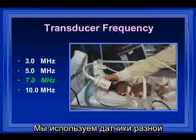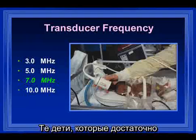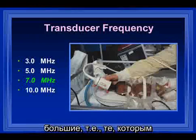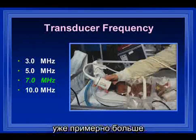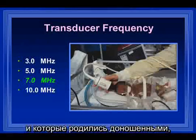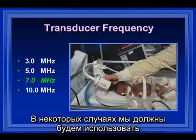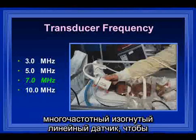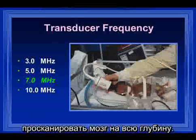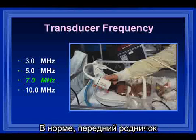We use a variety of transducer frequencies in infants. In those babies who are quite large — those who are more than approximately five to six months of age and who are full-term — we will generally use a three megahertz probe. We will at times have to use a curvilinear broad bandwidth so that we can penetrate to the depths of the brain.